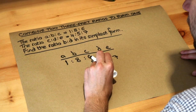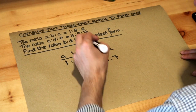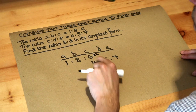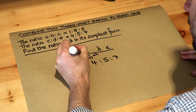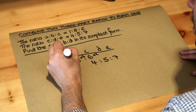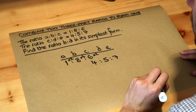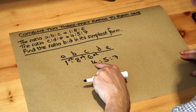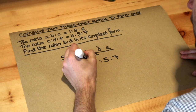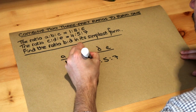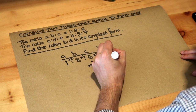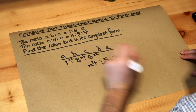To get the 6 to 12 we have to times it by 2, and whatever we do to one part of the ratio we have to do the same to all parts — so times by 2 throughout. To get the 4 to 12 we have to times it by 3, so we times that by 3, that by 3, and that by 3 for consistency.